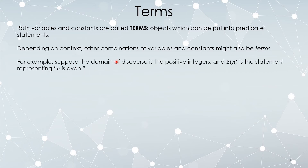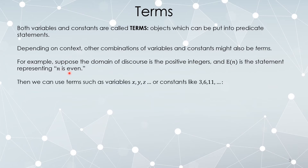For example, suppose the domain of discourse is positive integers and e of n represents the number n is even. So you could say x is even, y is even, z is even. I don't know if those are true or false until I make a choice — like 3 is even: false; 6 is even: true; 11 is even: false — but at least now they're statements.